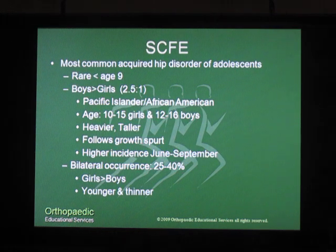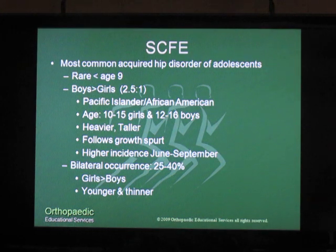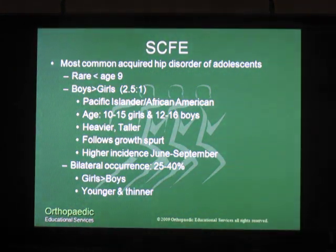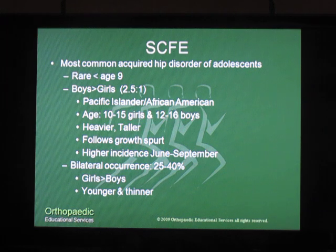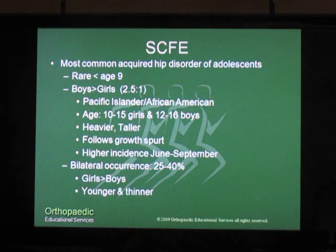The slipped capital femoral epiphysis, or SCFE as it's more commonly referred to, is the most common acquired hip disorder in adolescence. It occurs in boys more often than girls and usually occurs in the ages of about 10 to 15 in girls and 12 to 16 in boys. Patients are usually heavier and it is commonly seen around a recent growth spurt.